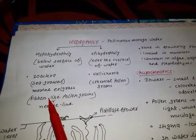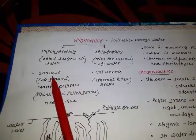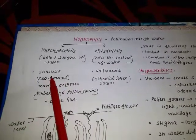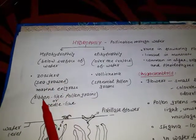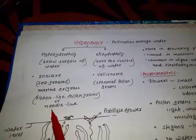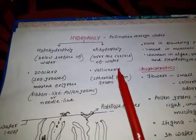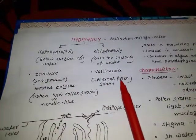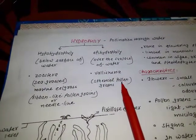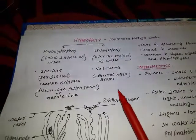Pollen grains in Zostera are ribbon-shaped or needle-like, whereas in Vallisneria they are spherical in shape.